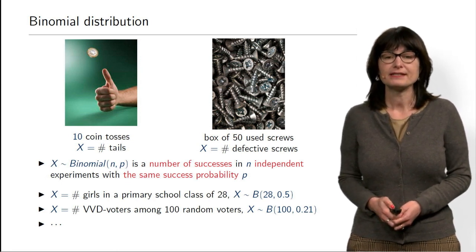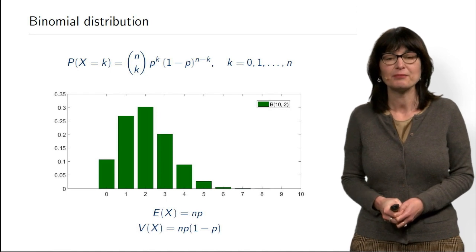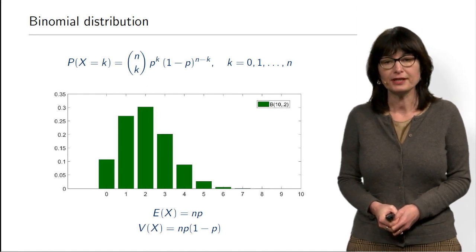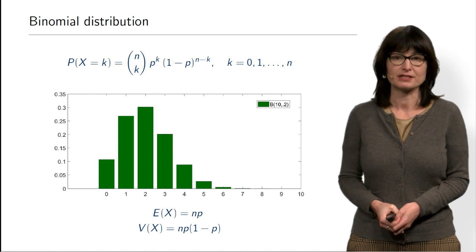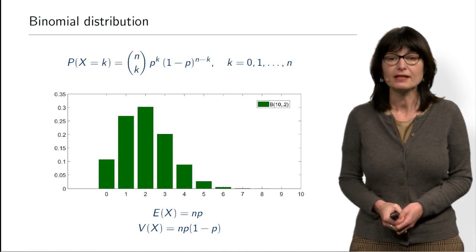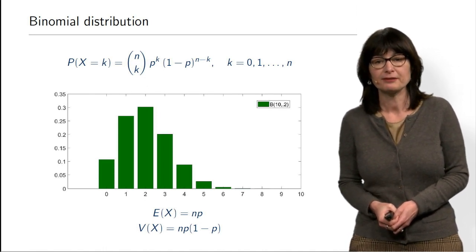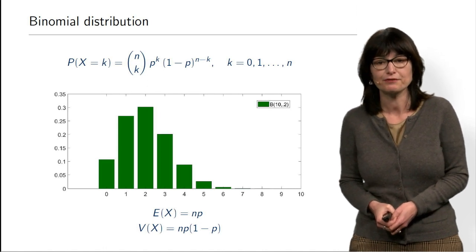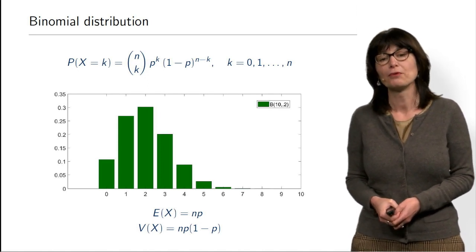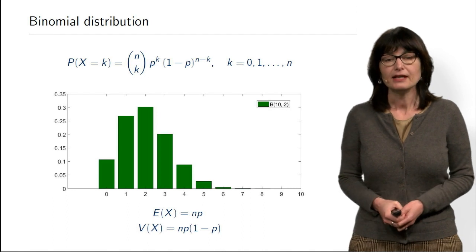Mathematically, we discussed the formula for binomial distribution. We are interested in the probability that the number of successes equals a particular number K, for every K from 0 to N. The formula consists of three factors: P to the power K is the probability of K successes; 1 minus P to the power N minus K is the probability of N minus K failures; and N-choose-K is the number of ways to have K successes and N minus K failures out of N.